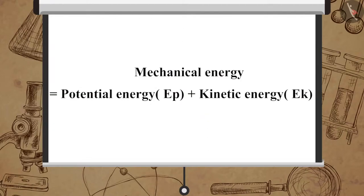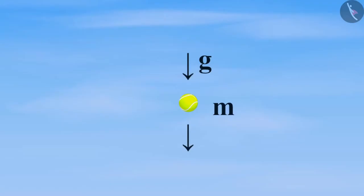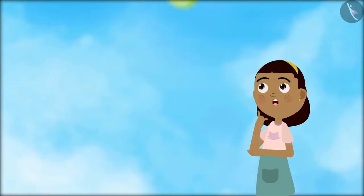The potential energy and kinetic energy of an object together form the mechanical energy of the object. During free fall, the amount of decrease in potential energy equals the amount of increase in kinetic energy. Thus there is a continuous transformation of gravitational potential energy to kinetic energy. Now let us see if the total energy of an object always remains constant.